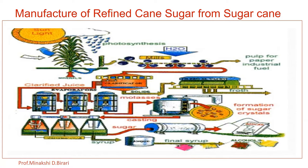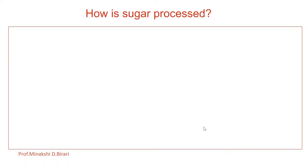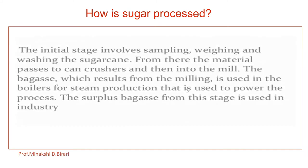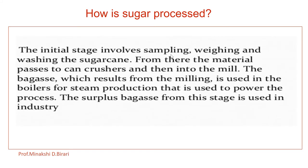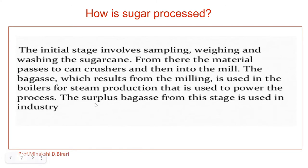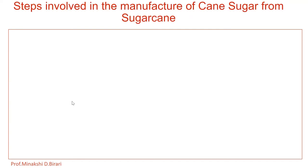Let us see the steps involved in the manufacturing of sugar and how sugar is processed. The initial stage involves sampling, weighing, and washing the sugarcane. From there, the material passes to cane crushers and then into the mill. The bagasse, which is the byproduct from the milling, is used in the boilers for steam production to power the process. The surplus bagasse is used in industry.